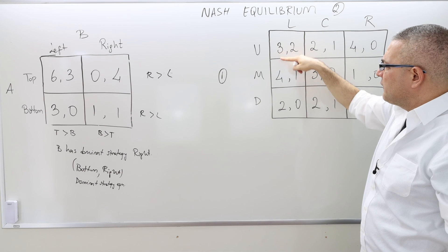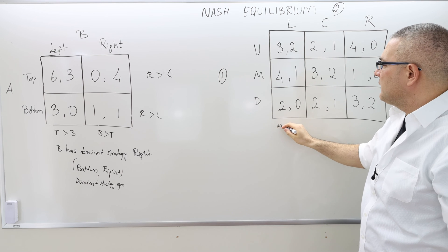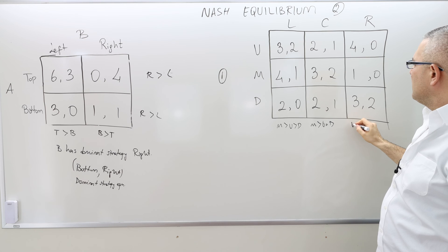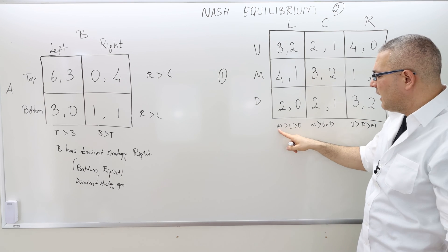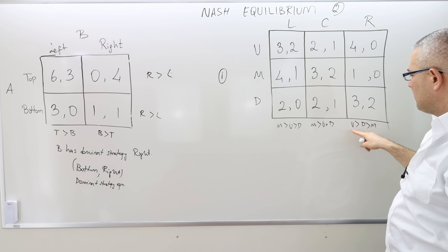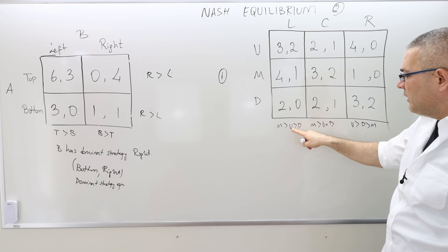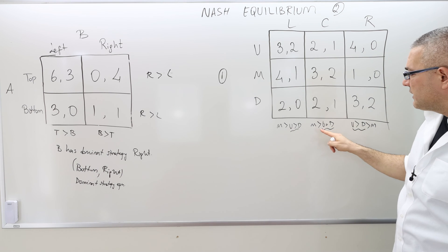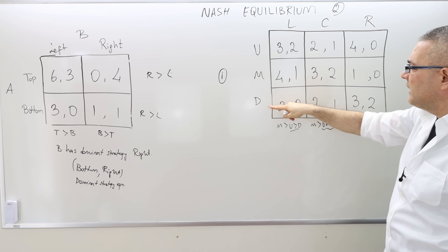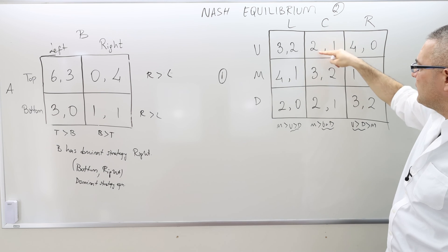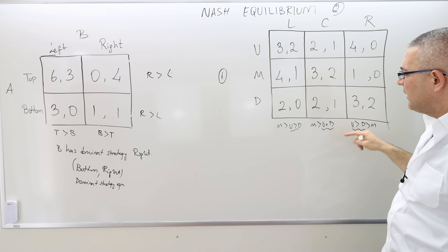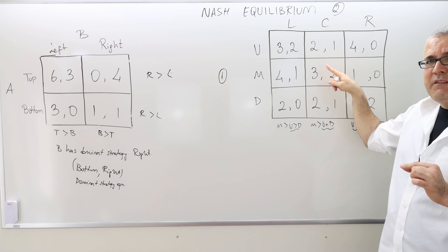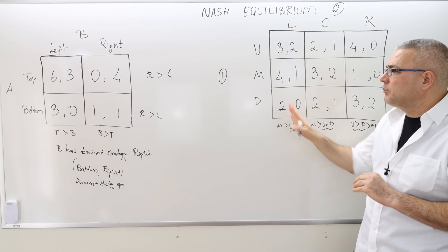For player 1, I'm comparing the first numbers across rows because player 1 is the row player. M is better than U, better than D in one column. M is better than U, equal to D in another. However, U is better than D, better than M in the third column. So M is not a dominant strategy. U is not a dominant strategy because U equals D sometimes and is sometimes worse than M. D is weakly worse than U, but that doesn't make U a dominant strategy — it's not strictly dominating. So we conclude that player 1 has no dominant strategy.